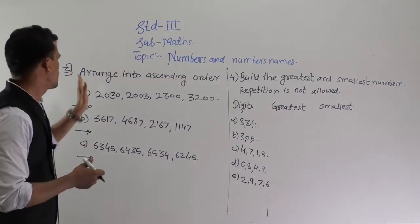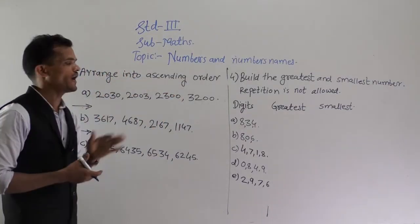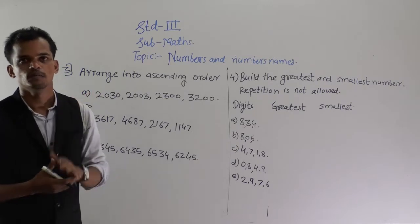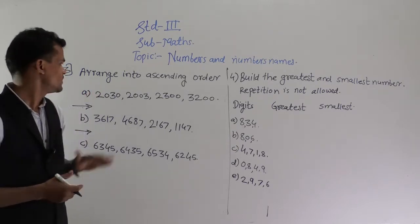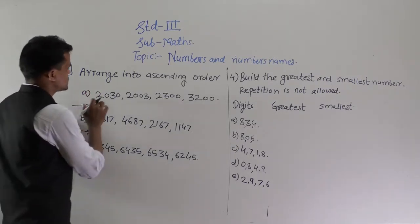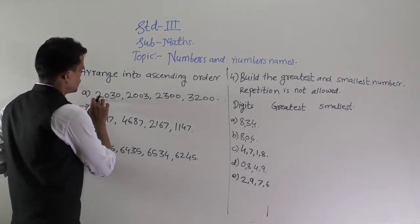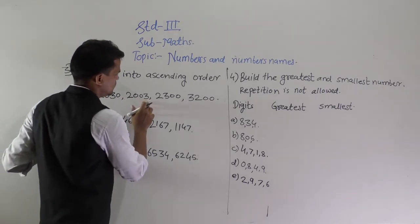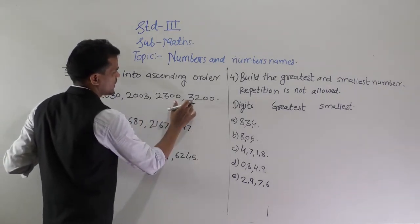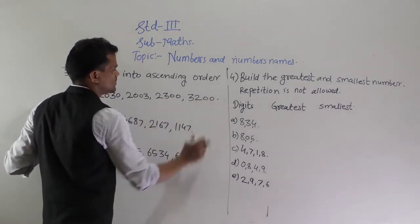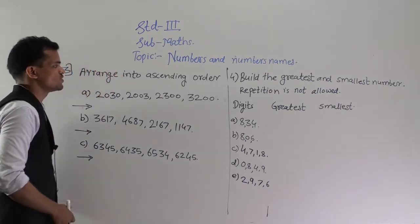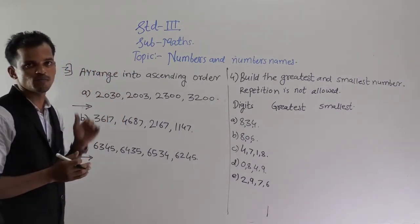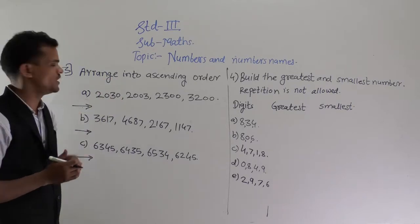Question number 3: arrange into ascending order. Ascending order means small to big order. The numbers are: 2030, 2003, 2300, and 3200. We have to arrange these numbers from small to big.